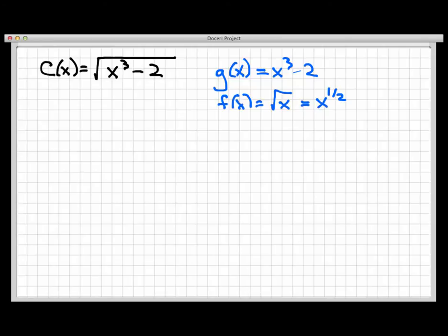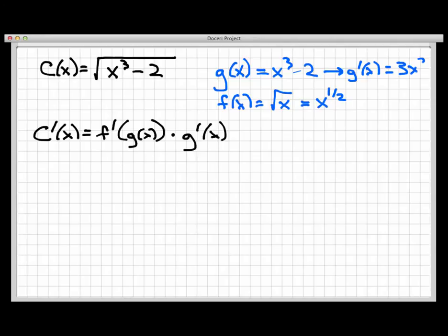So in using the chain rule, we are going to just, first of all, write down the definition of the chain rule, which says that C prime of x would be f prime of g(x) times the derivative of g. So now it's just really a matter of computing all the ingredients to this formula here that I've written down and putting them in the right place. So let's do that off to the side. Here is g(x), and so g prime of x is quite simple, that's just 3x squared. And f(x) is x to the 1 half, so therefore f prime of x is 1 half x to the minus 1 half.